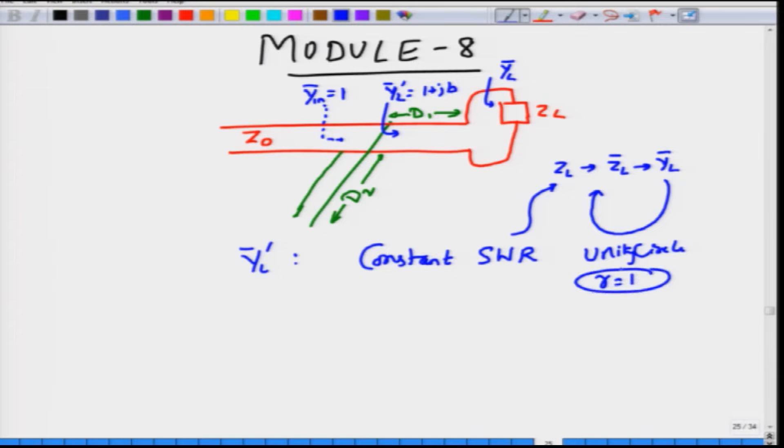YL bar was actually the position where the constant SWR corresponding to ZL intersected with unity or unit circle on the Smith chart. Unit circle on the Smith chart was given by R equal to 1. This is a special circle. And the point where the constant SWR circle and the R equal to 1 circle intersected, you obtained the impedance or the admittance YL bar as some form 1 plus JB.